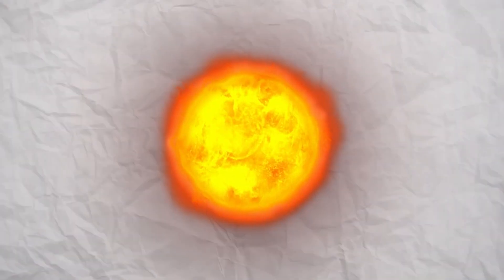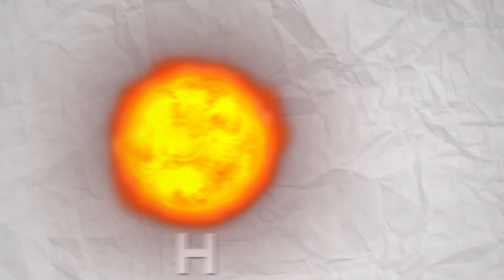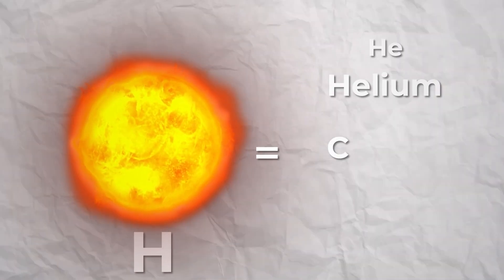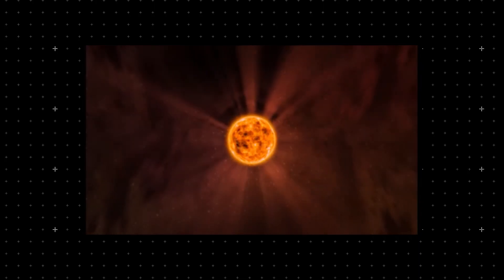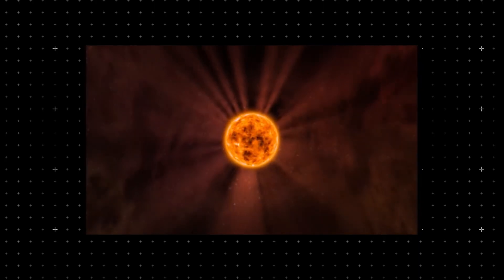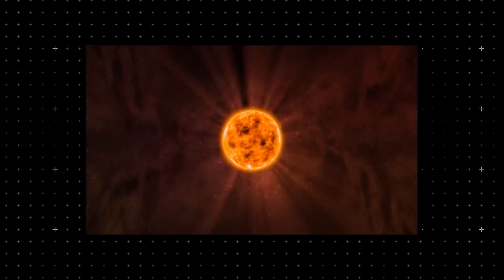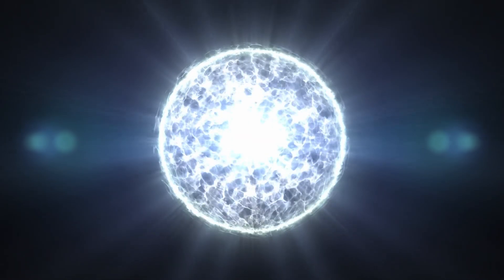When hydrogen runs out in a star, it begins to synthesize heavier elements like helium, carbon, and oxygen. This causes the star to expand and shine brightly, eventually shedding its outer layers, which forms a planetary nebula.